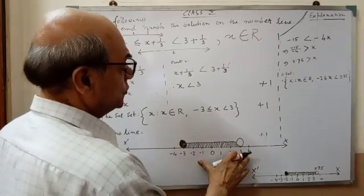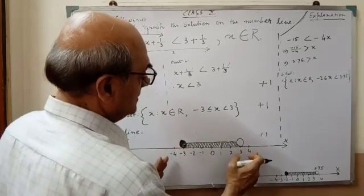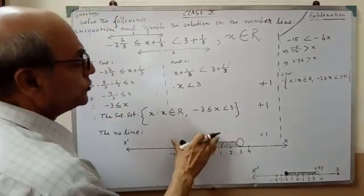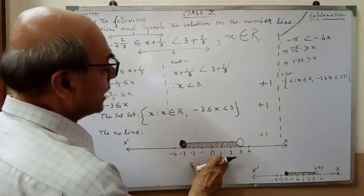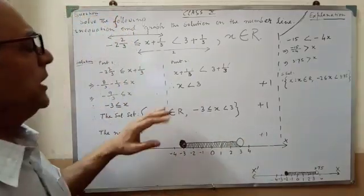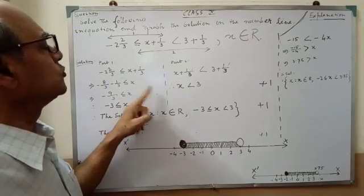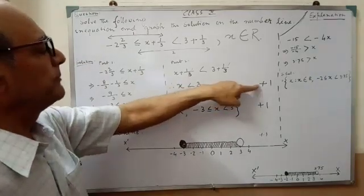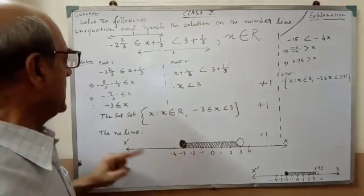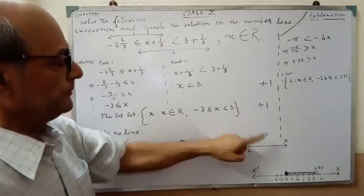You have to write one more value on either side beyond the required values. After drawing the graph in this way, if you do this part accordingly, you will get another part mark of plus 1. In this way, if you do the three parts correctly, you will get three marks: first, solving by breaking the equation into two parts gives plus 1; then the solution set written exactly correctly gives another plus 1; and the number line drawn correctly gives another plus 1.